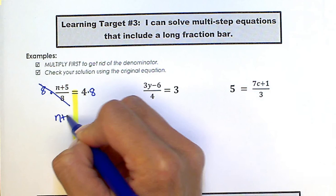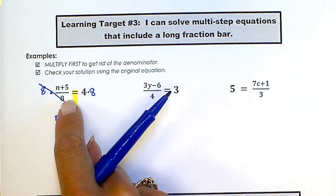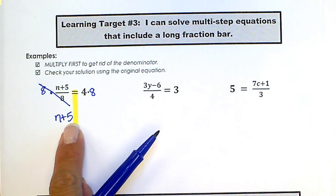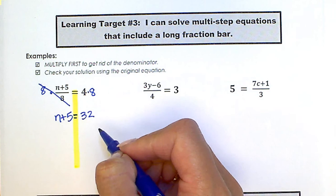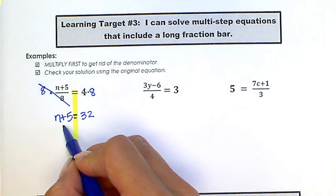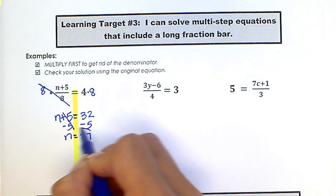Now that has canceled out our denominator, so we do not have a fraction bar or denominator anymore. We simply have n plus 5 equals 32. Now we can finish the equation by subtracting 5, and n equals 27 for the first one.